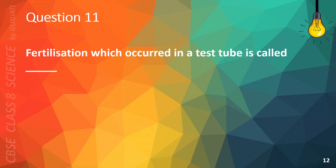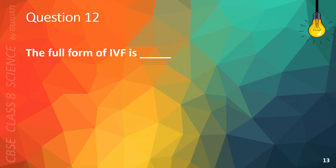Question 11. Fertilization which occurred in a test tube is called: A. ICF, B. FCI, C. IDF, or D. IVF. The correct answer is D. IVF.